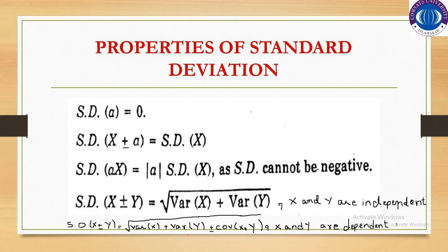If both x and y are dependent, then the standard deviation of x plus y will be the square root of variance of x plus variance of y plus 2 times covariance of x and y. And for the standard deviation of x minus y, it would be the square root of variance of x plus variance of y minus 2 times covariance of x and y.